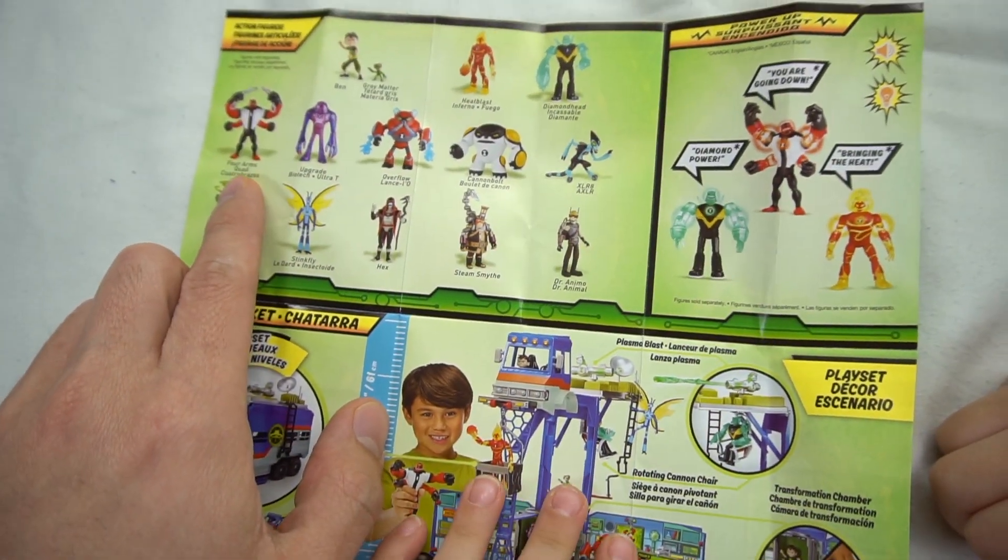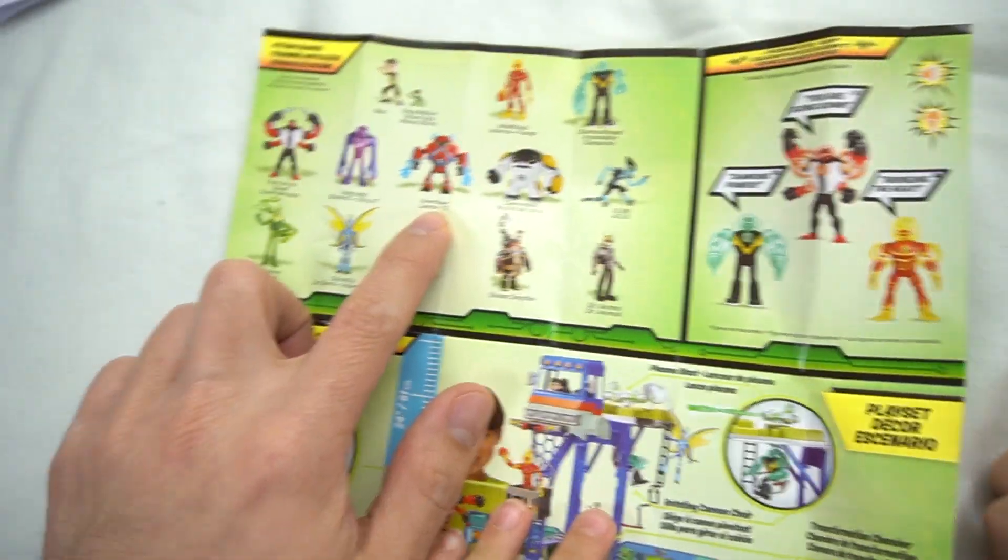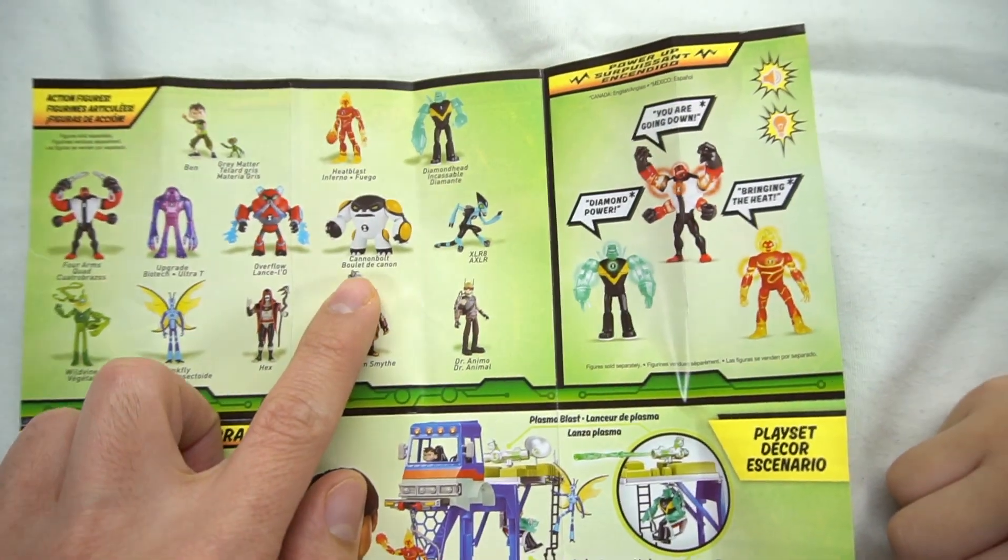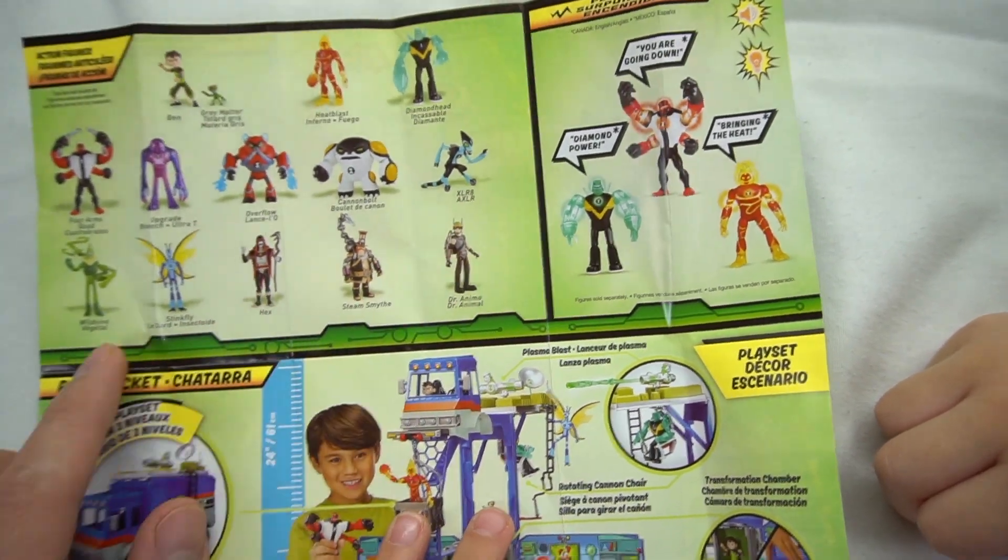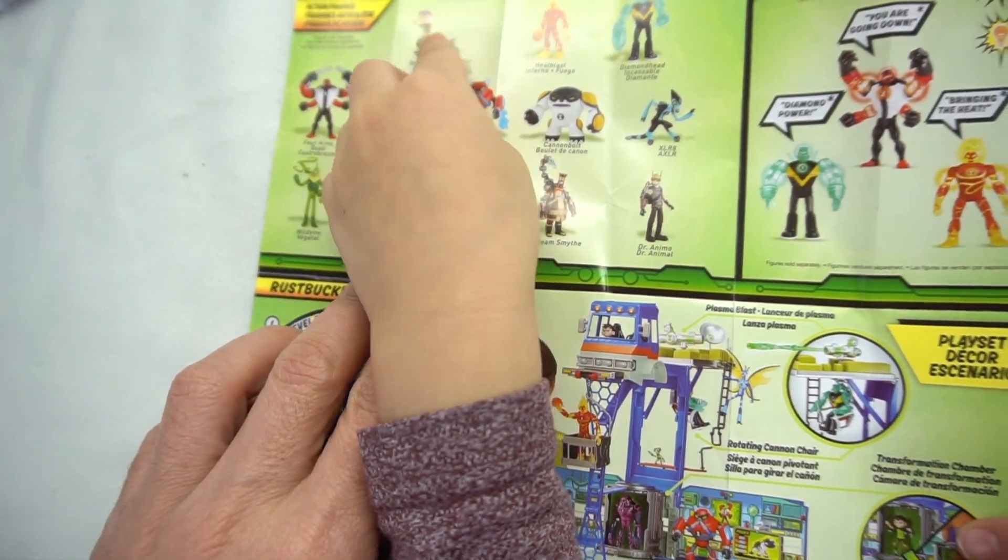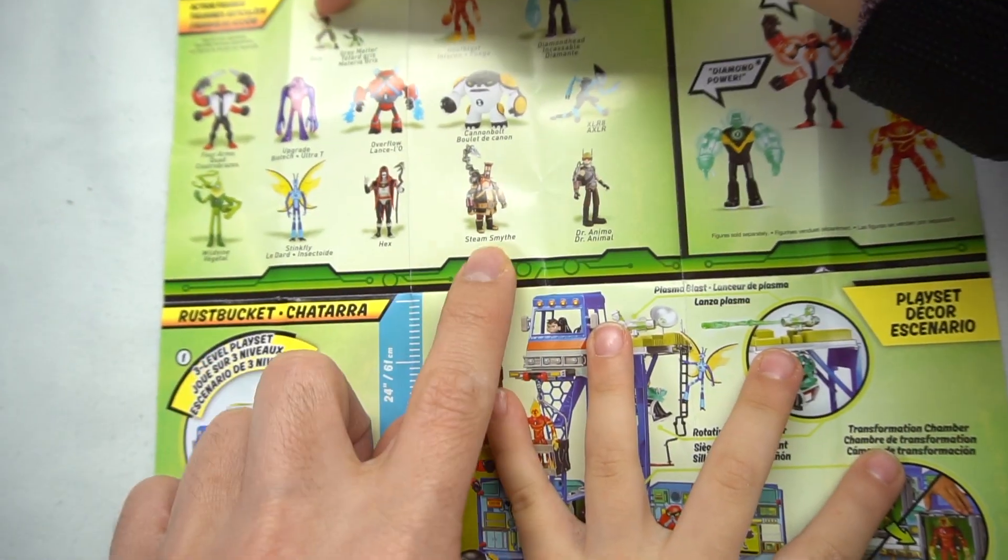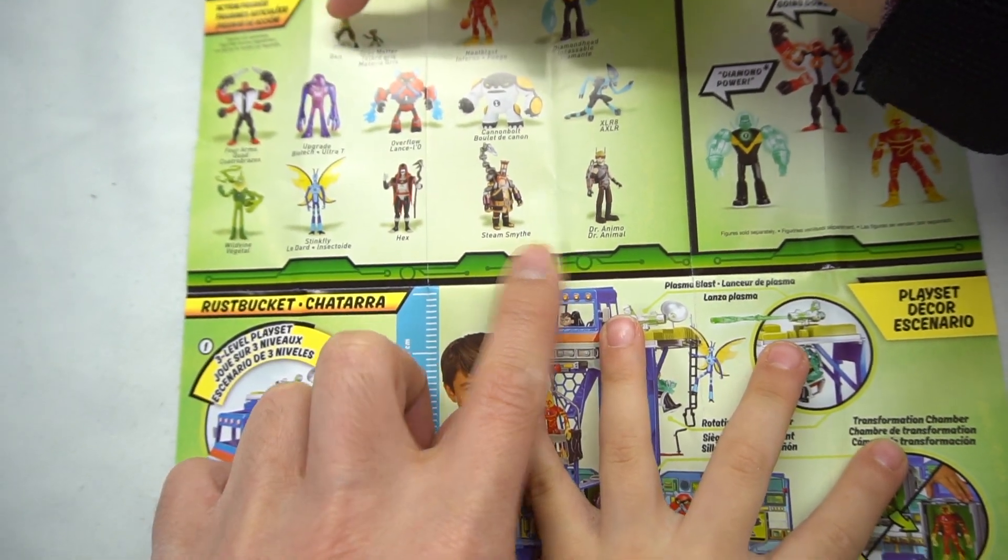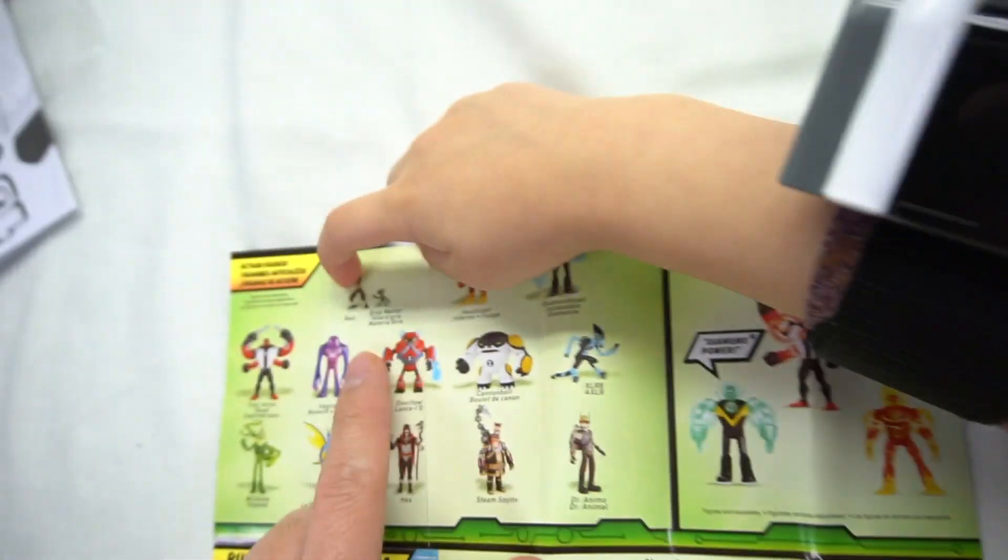Diamond Head, Four Arms, Upgrade, Overflow, Cannonbolt, XLR8, Wildvine, and Stinkfly. And Hex. And Grey Matter! And this guy. Okay, let's see.